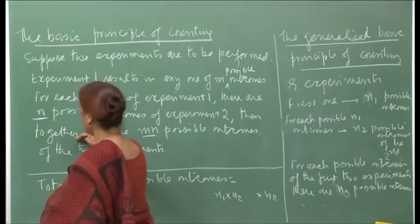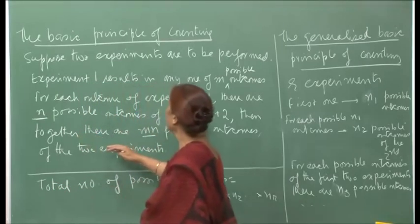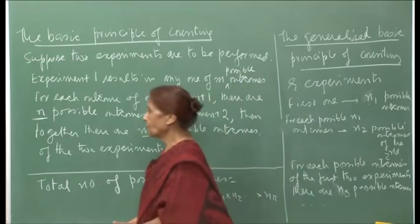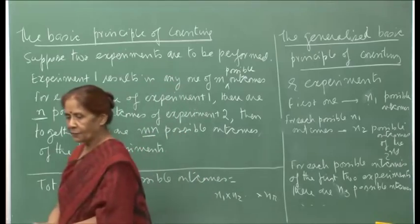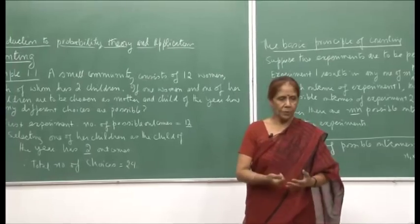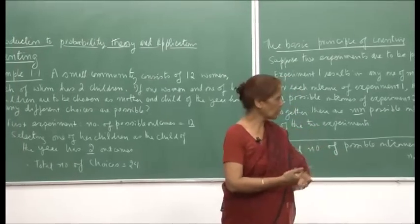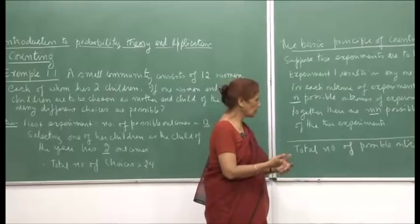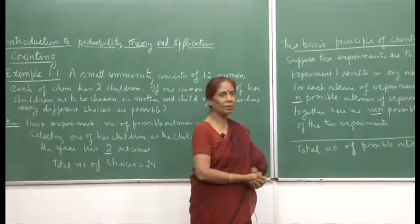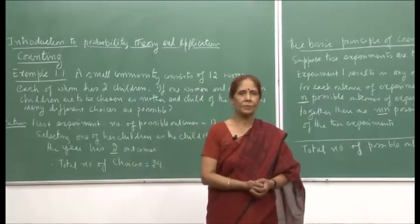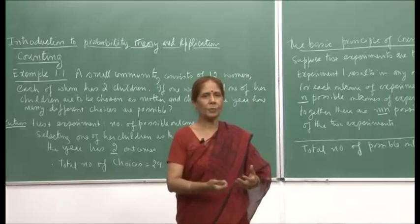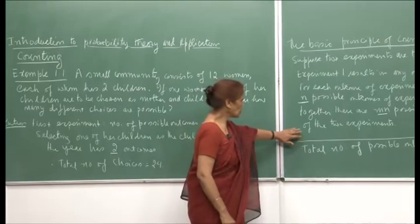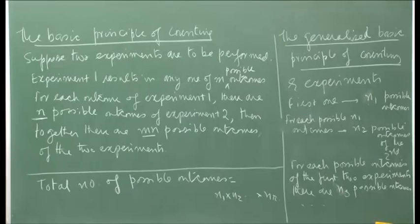Once you understand this basic principle of counting, things become simple, because you have to first find out what are the possible outcomes. When we define the concept of an event, we will try to find out in how many ways a particular event can occur.